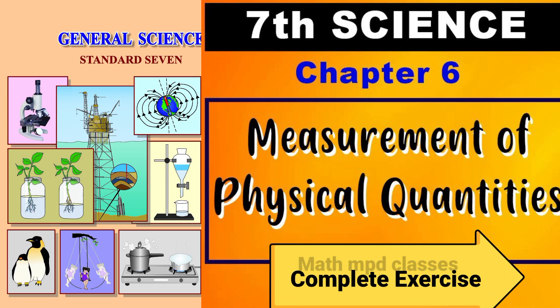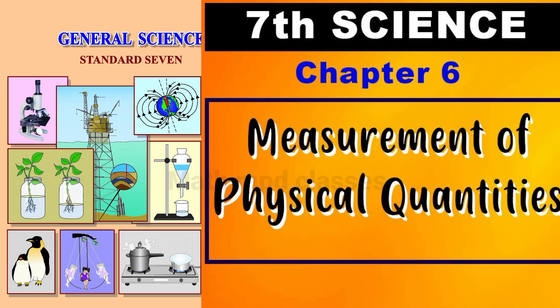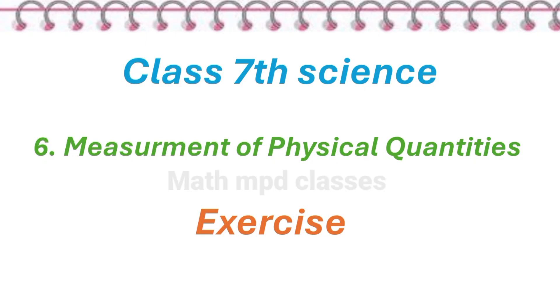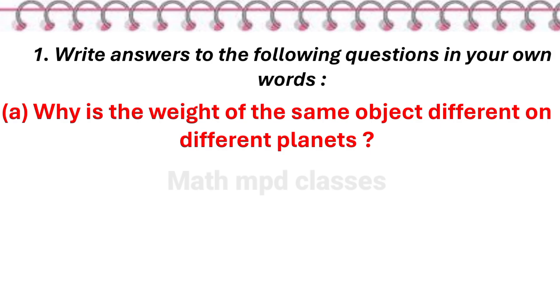Hello dear students, today we are going to see class 7th science chapter number 6, measurement of physical quantities, complete exercise. The first question is: write answers to the following questions in your own words. First question, why is the weight of the same object different on different planets?